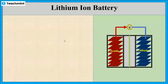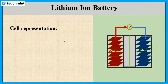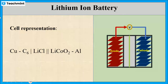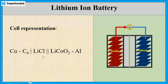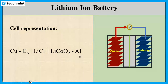Next, we will see the cell representation of this battery. The anode side has graphite on copper foil, that is in contact with lithium fluoride, that is in contact with lithium cobalt oxide on aluminum foil at the cathode side.